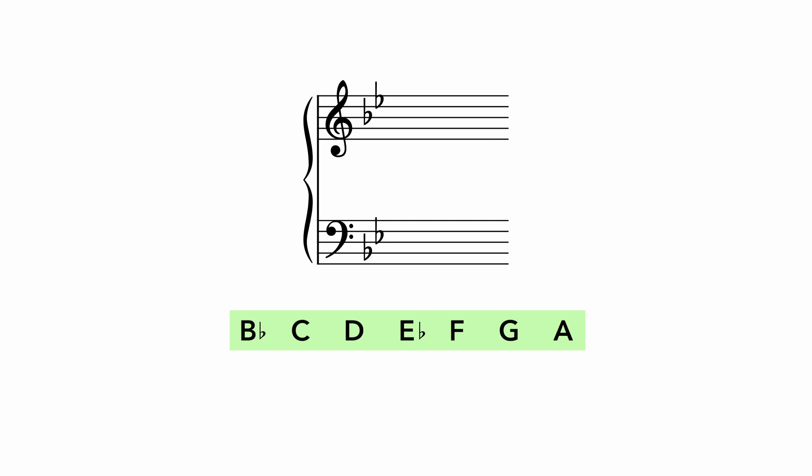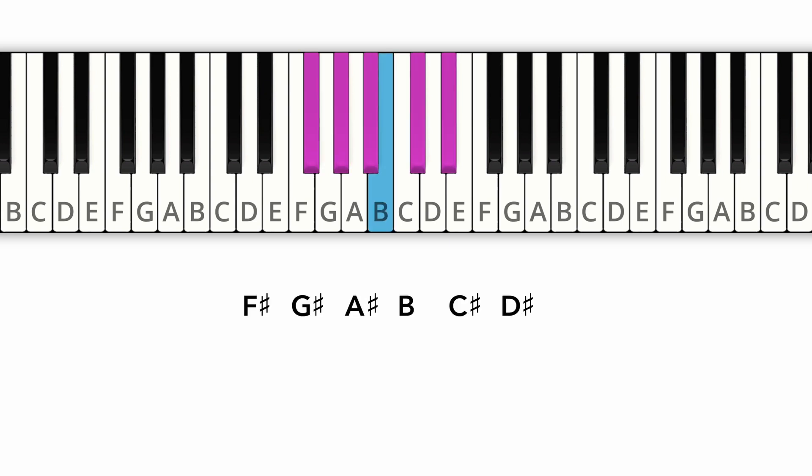Finally, this also explains why sometimes even white keys need to switch their names. In an F-sharp major scale, it turns out that this white key can't remain an F. Instead, we need to give it a new name, E-sharp.